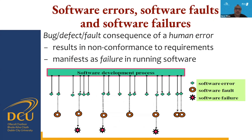Software errors, software faults and failures are important to understand. A bug, defect, and fault are consequences of a human error, which can result in non-conformance to requirements and can manifest as failure in running systems. In the software development process, software errors can occur frequently; software faults are caused by errors and become more acute over time. Some software faults become software failures — and if you are lucky, you will have fewer failures than faults.